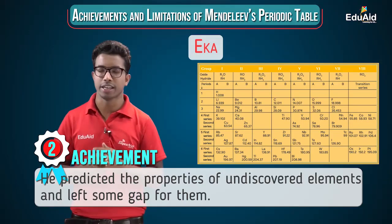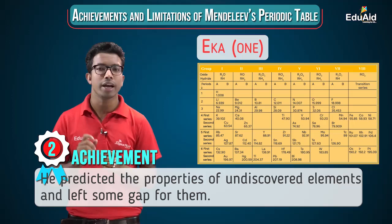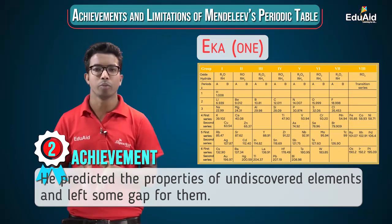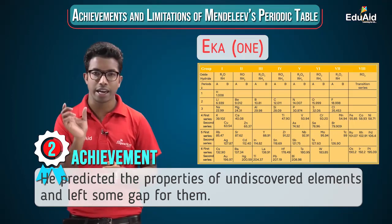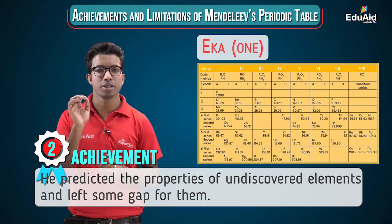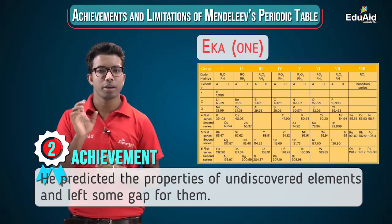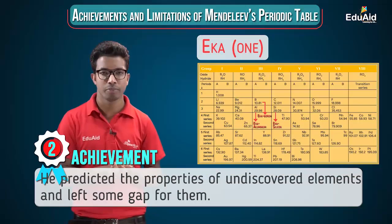The Eka prefix was given to the name of the element right before the gap in the same group. For example, the gaps were named Eka-boron, Eka-aluminium, and Eka-silicon. These are the names of certain gaps in Mendeleev's periodic table.